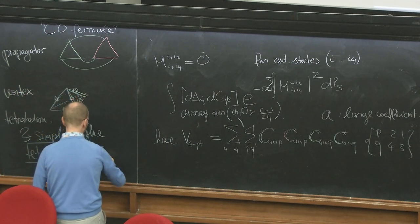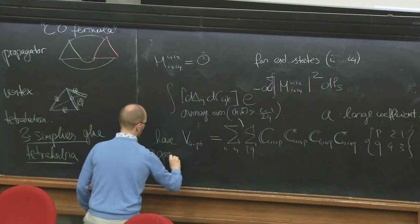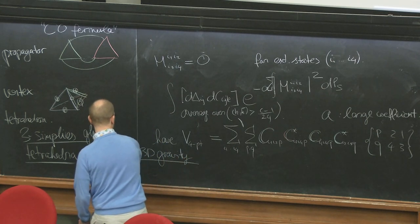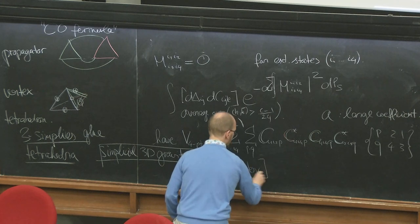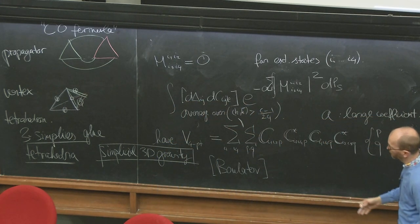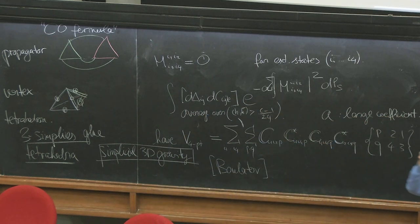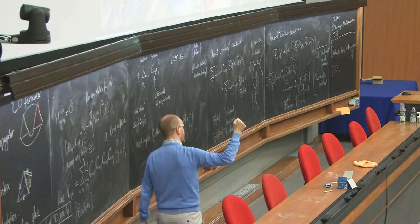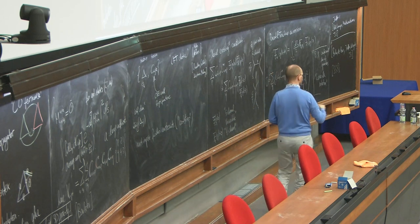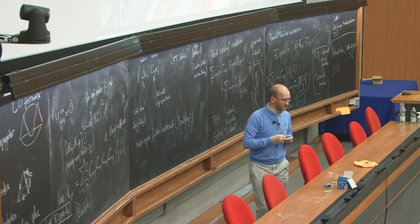What is different from what people have done in the past with simplicial 3D gravity — one name being Boulatov, and also people like Jan Ambjorn and Renate Loll — is that this is now the discrete version of a three-dimensional tetrahedronization of three-dimensional Euclidean manifolds. In the same sense that I started with the matrix, this tensor model integrates over all configurations. The idea is that you take some double scaling limit to get a continuum path integral of three-dimensional Euclidean quantum gravity. I'll stop here — thanks for your attention.